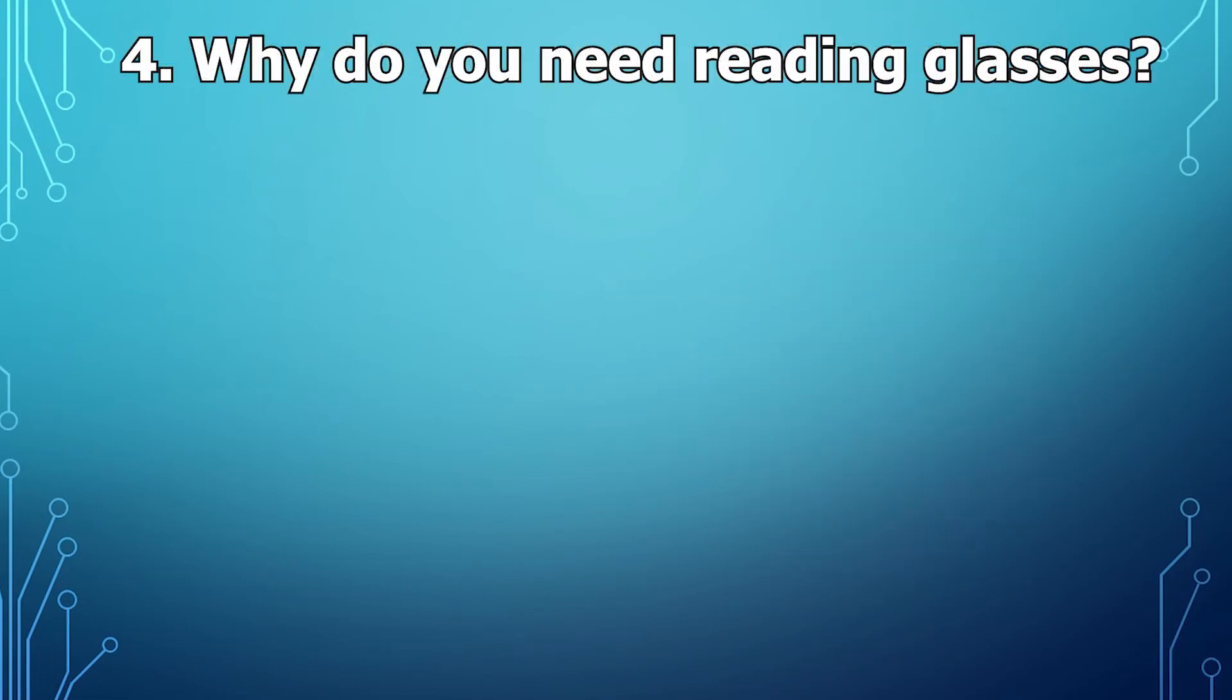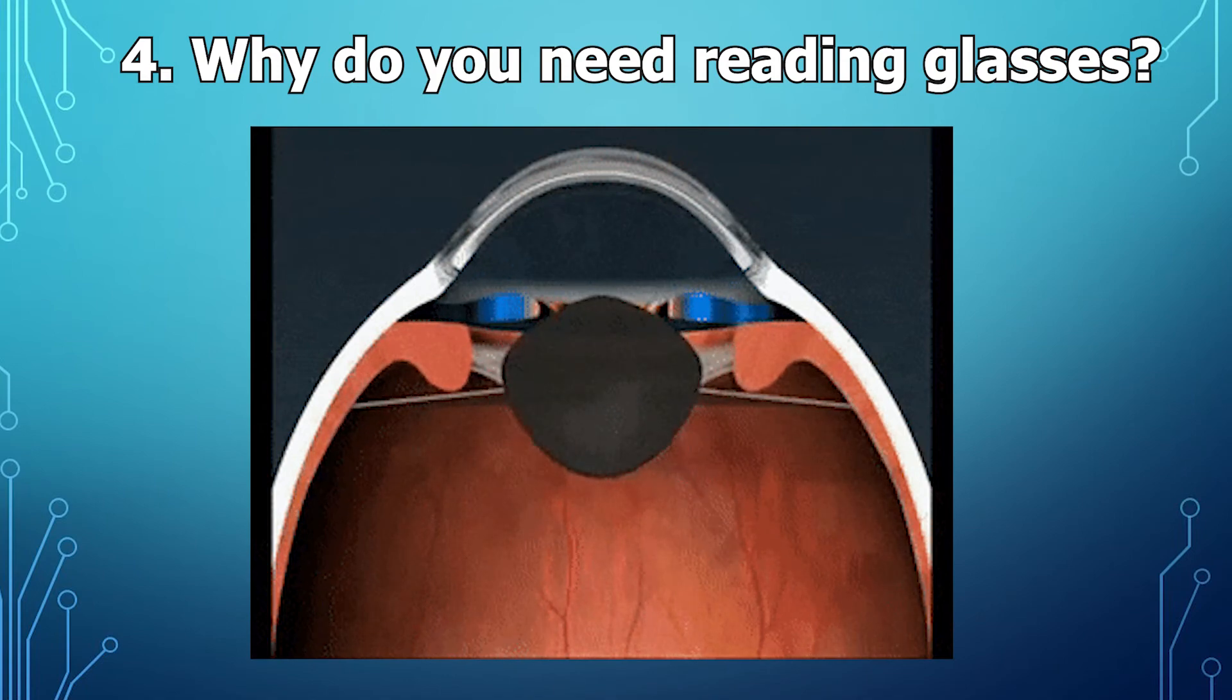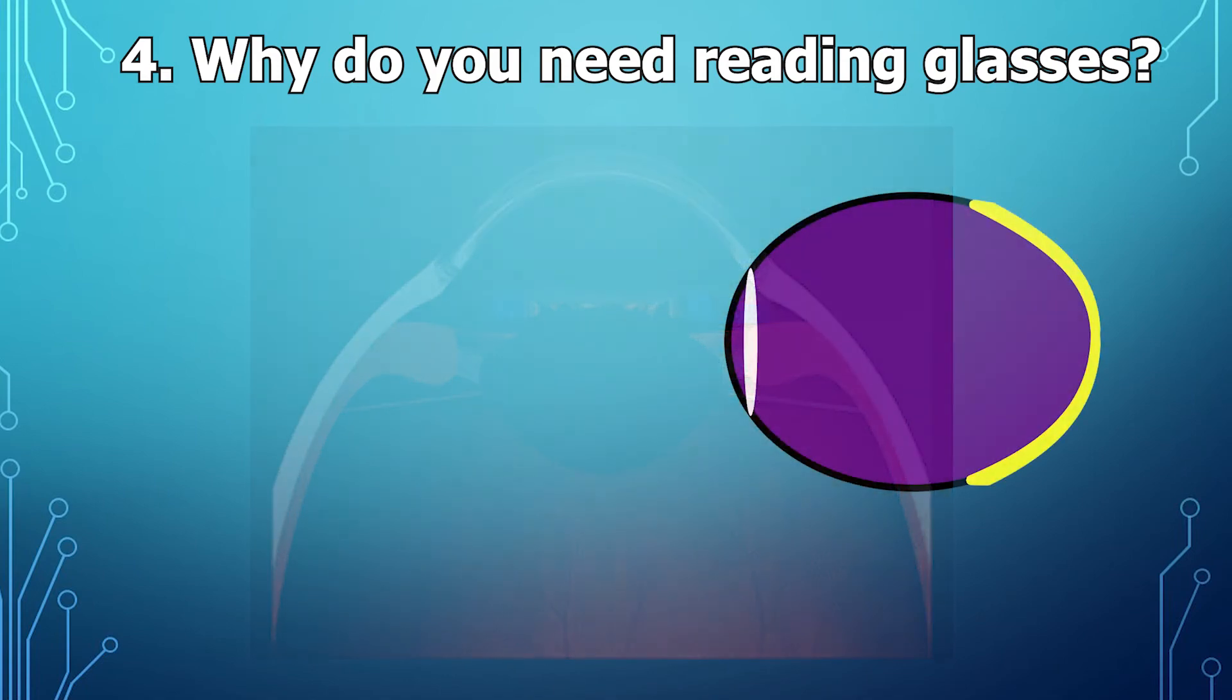So then why do you need reading glasses? What's that all about? What does that have to do with any of this? Well, the lens isn't just a stationary piece of glass like it is in glasses or contacts. It's a pliable piece of protein that you can stretch into different shapes for when you're looking at objects at different distances.